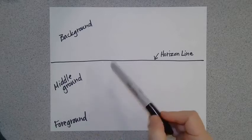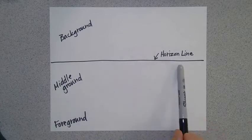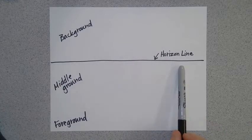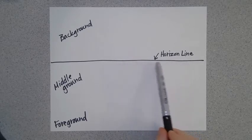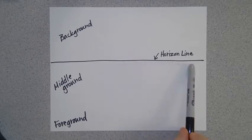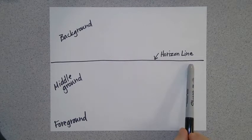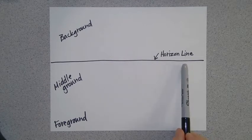The horizon line is the line where the sky and the ground meet. This line is super important because it's going to help us determine how big the items we include in our picture are going to be.